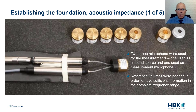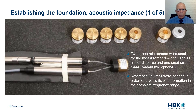The microphone arrangement used for the measurement consists of two probe microphones, which can be seen on the lower left part of the slide. One microphone acts as a sound source and the other is used as a measurement microphone. To ensure proper measurement results, several reference volumes — visible on the upper part of the slide — were needed to have sufficient information in the complete frequency range. In the photo, one of the reference volumes is connected to the microphone arrangement through two soft flexible tubes.